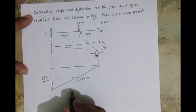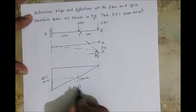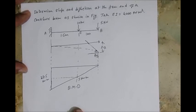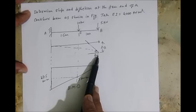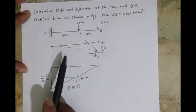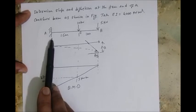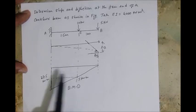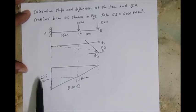Okay, now if you go with the concept, the second method, slope at B is nothing but the area of M over EI diagram between A and B. So slope at B is nothing but the area of M over EI diagram.